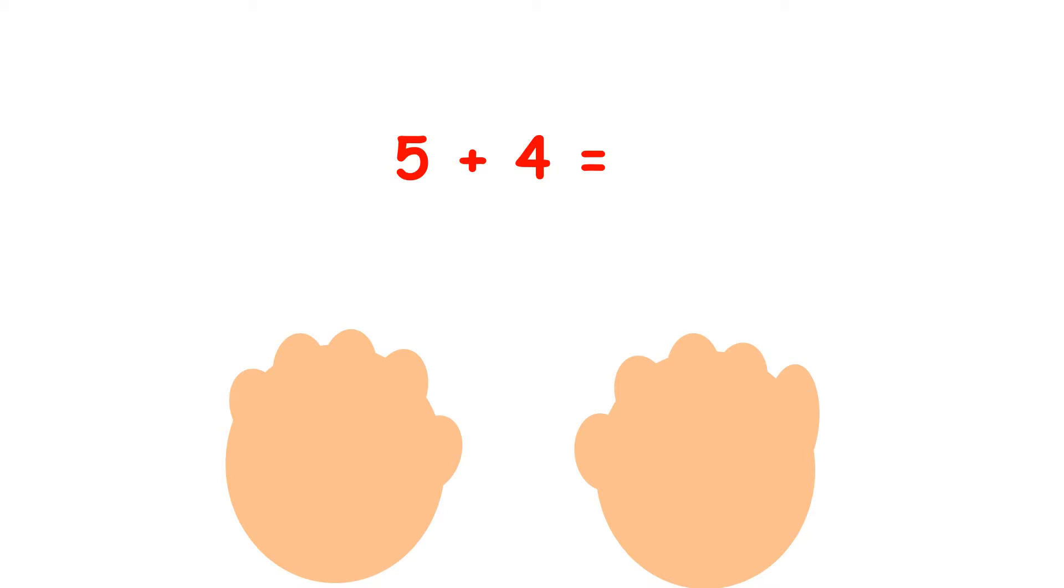Now I've got 5 plus 4. So I'm going to start on 5 and count on 4. So I say 5 before I put any fingers up and that's really important. I say 5 and then I put my fingers up as I say 6, 7, 8, 9. So my answer is 9.